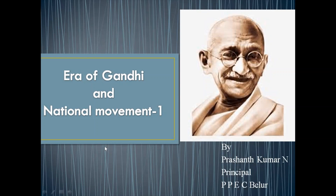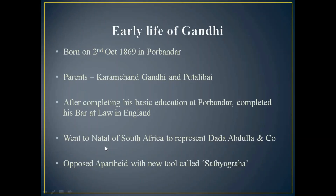Today let us discuss the eighth lesson of history under Social Science: Era of Gandhi and National Movement. Gandhiji's early life — as you know, Gandhiji was born on 2nd October 1869 in Porbandar. His parents were Karamchand Gandhi and Putlibai, so his full name is Mohandas Karamchand Gandhi. He was influenced on moral values more from his mother Putlibai.